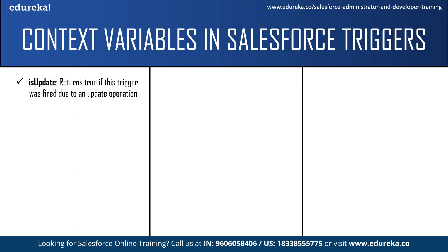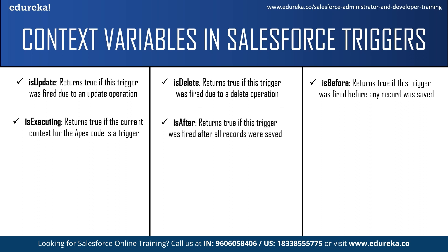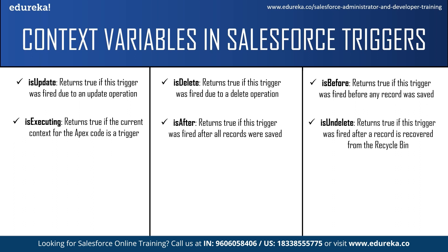Next is isDelete, which returns true if the trigger was fired due to a delete operation. After this we have isBefore, which returns true if the trigger was fired before a record was saved to the database. After this we have isExecuting, which returns true if the current context for the Apex code is a trigger and not a Visualforce page, web service, or API call. The next context variable is isAfter, which returns true if the trigger was fired after all the records were saved to the database.